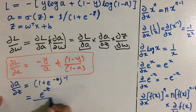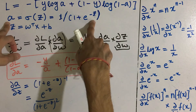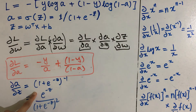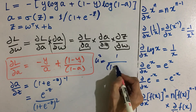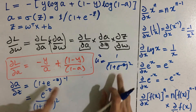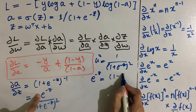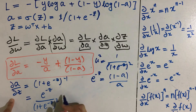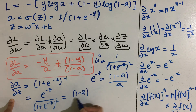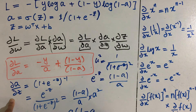We can see that a equals 1 upon (1 + e^(−z)), so (1 + e^(−z))^2 is nothing but a-squared. We can also write e^(−z) in terms of a, which comes out to be (1 − a) upon a. Therefore del a by del z can be written as (1 − a)/a multiplied by a-squared, which simplifies to a times (1 − a).